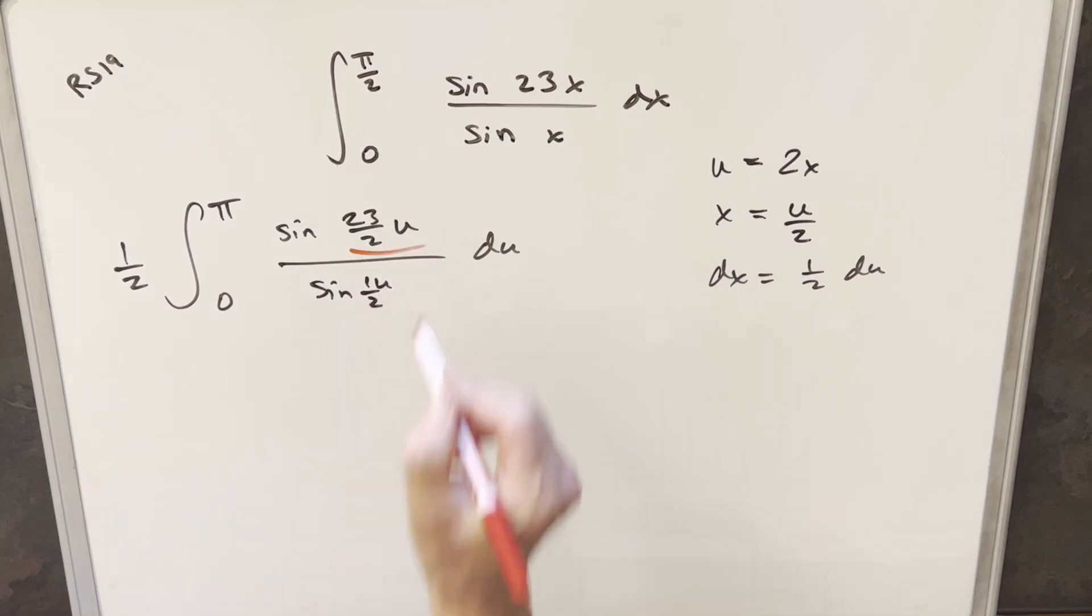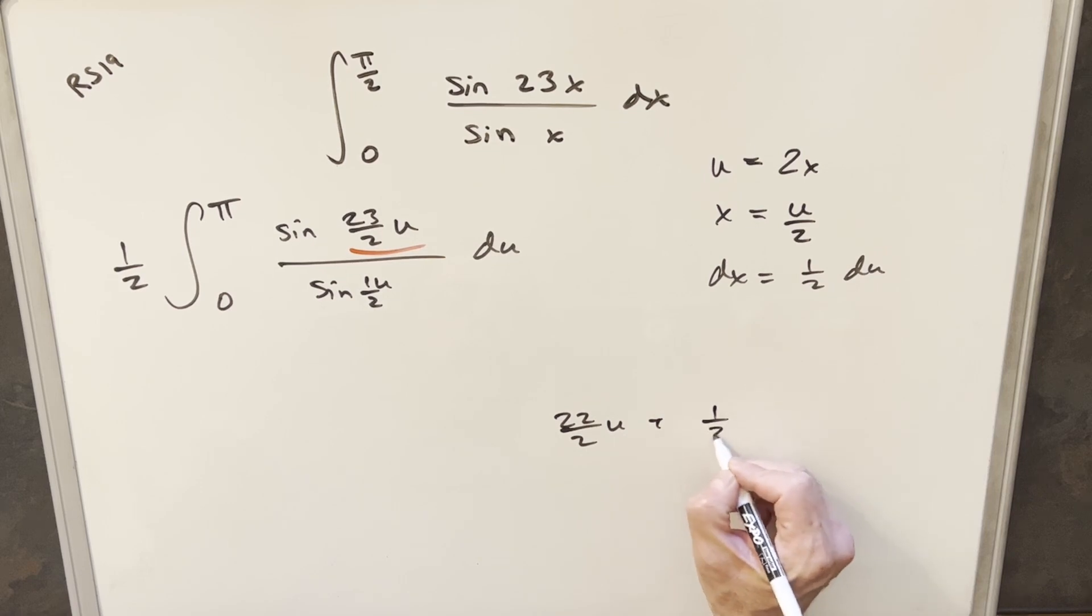Then from here, all I'm going to do is take this 23 over 2 u, and I'm just going to rewrite that. So 23 over 2 u, that's the same thing as we could split that up as 22 over 2 u plus 1 half u, but then that's just 11. So I can write this piece as 11 u plus 1 half u.